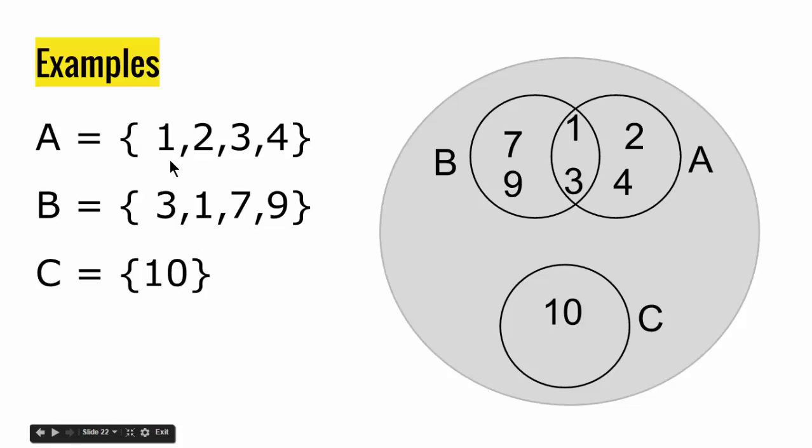We see there are two elements that are shared by both sets A and B. We have 1 here and 1 here, and we have 3 here and 3 here. But we don't have any elements that are shared between C and B and A.